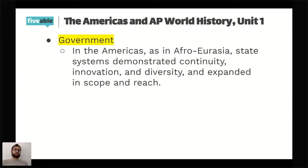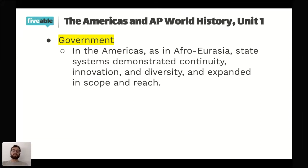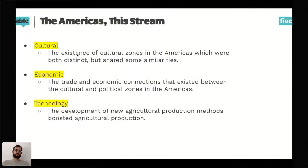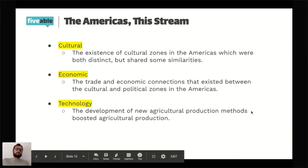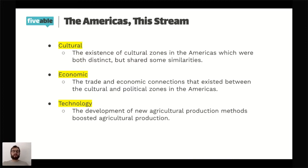Let's talk about the Americas. In AP World History Unit 1, the Americas are examined in terms of forms of government. In Afro-Eurasia as in the Americas, state forms developed — sometimes staying the same, sometimes changing. In this stream we're also going to expand on that, talking about cultural phenomena, economics, and technology — specifically agricultural technology and methods of production.